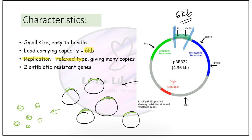pBR322 has two noted disadvantages: first, it can easily be lost in continuous culture due to low stability; second, it can replicate only in gram-negative bacteria such as E. coli. Despite these disadvantages, it is still commonly used because the drawbacks are not prominently observed in typical experimental conditions.